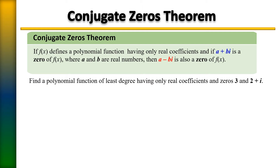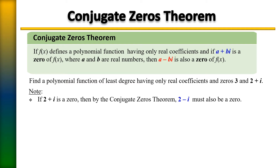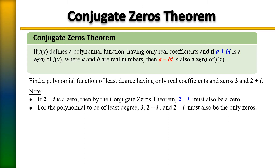So far we have two zeros: 3 and 2 plus i. However, by the Conjugate Zero Theorem, if 2 plus i is a zero, then 2 minus i must also be a zero. So we have three zeros: 3, 2 plus i, and 2 minus i. We can write this as a degree-3 polynomial — that would be the smallest degree, the polynomial of least degree.